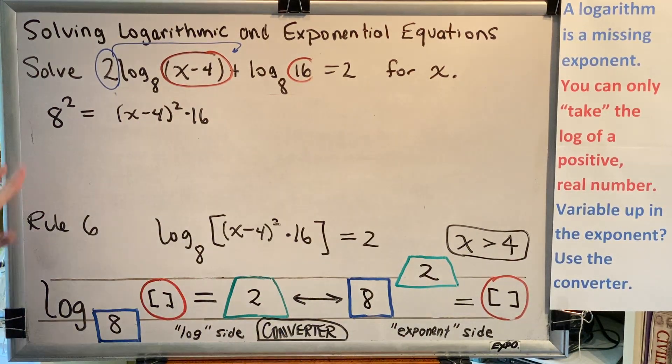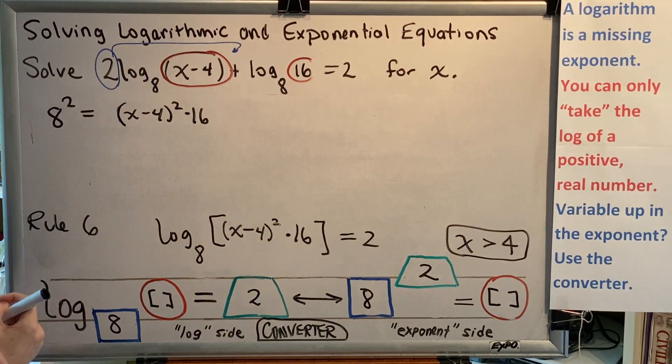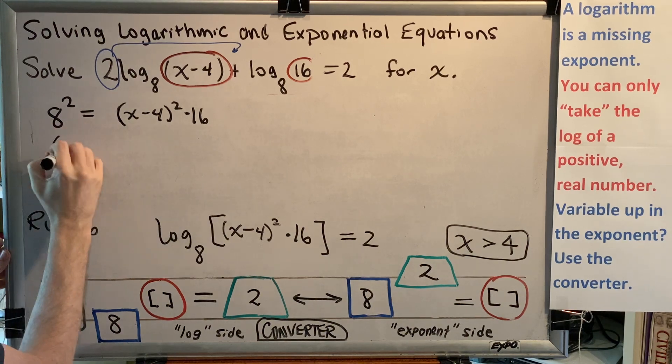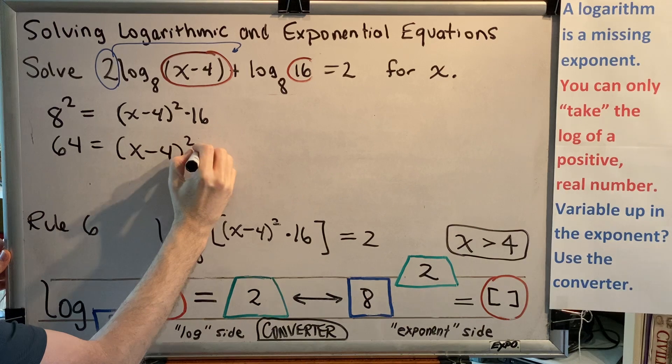Okay, so now we have an intermediate algebra problem to solve. We are no longer in the realm of college algebra. So let's see what we can do with this. 8 squared is 64. So 64 equals (x minus 4) squared times 16.